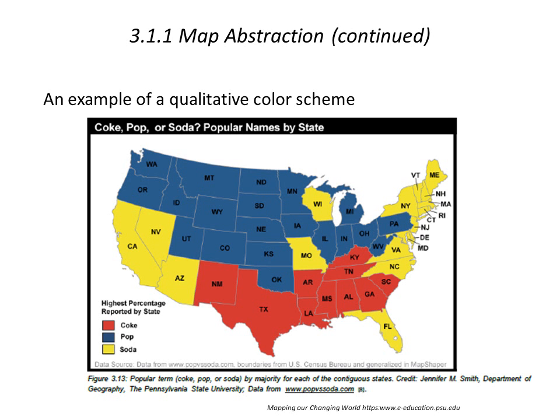Here's an example of map abstraction that we saw in an earlier part of Chapter 3. In this case, we simply look at a map that's been classified based on the results of a survey where people were asked what they call soft drinks — do they call it Coke, pop, or soda? And it's been classified and then aggregated at the state level.